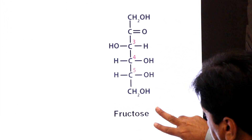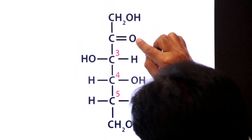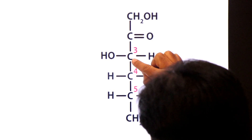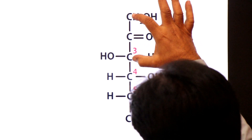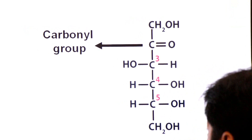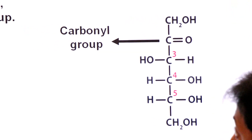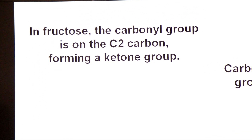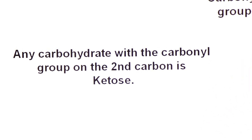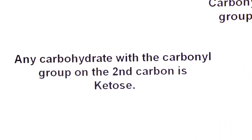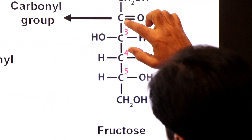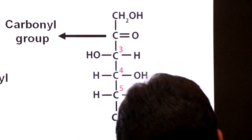In fructose, the carbonyl group is on carbon 2. Looking at the structure, the carbonyl group on carbon 2 is attached to carbon atoms both above and below it. When a carbonyl group is bonded to two carbon atoms, it is a ketone group. Therefore fructose is classified as a ketohexose. Any carbohydrate with a carbonyl group on the second carbon is a ketose.